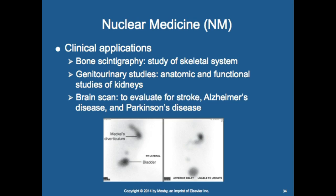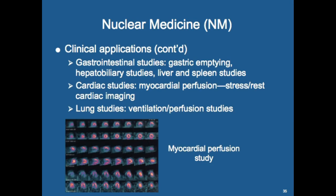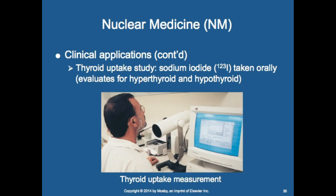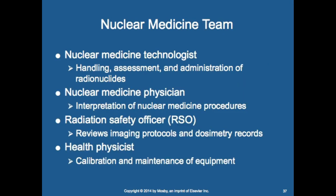For the urinary system, we look at anatomy and function of the kidneys. Brain scans evaluate for stroke, Alzheimer's, and Parkinson's. GI studies look at gastric emptying. Hepatobiliary studies examine the liver and spleen. Cardiac studies look at myocardial perfusion with stress and rest testing. Lung studies include ventilation and perfusion. For thyroid uptake, sodium iodide is given orally to assess for hyperthyroidism and hypothyroidism.